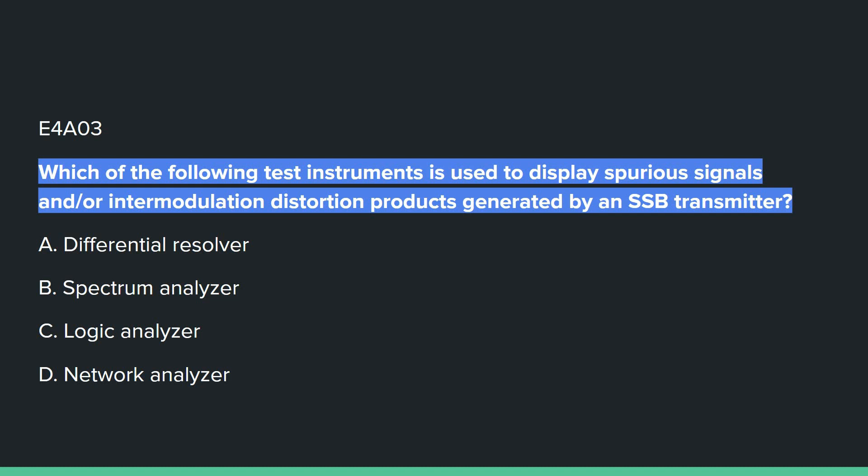E4A04: Which of the following test instruments is used to display spurious emissions and/or intermodulation distortion products generated by an SSB transmitter? Answer B: spectrum analyzer.